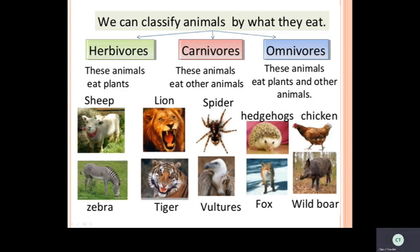Once again let us recall. Based on their eating habits, animals are divided into three types. First category: plant-eating animals — herbivores. Second category: flesh-eating animals — carnivores. Third category: animals that eat both plants and flesh of other animals — omnivores.